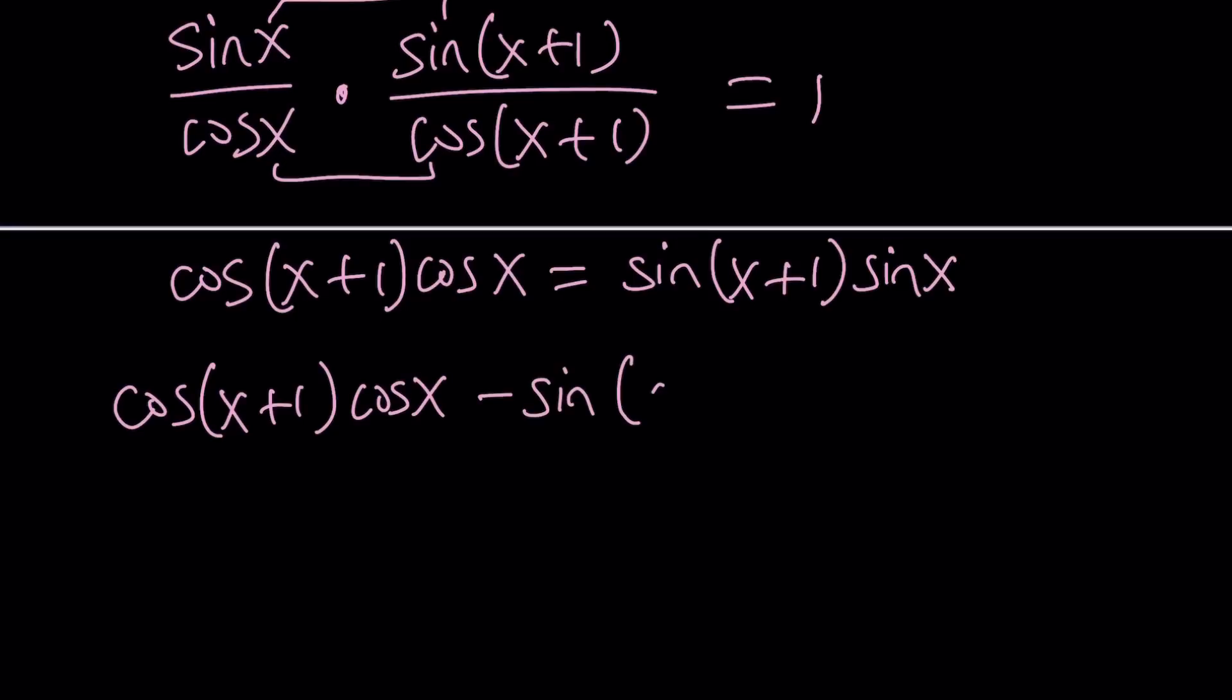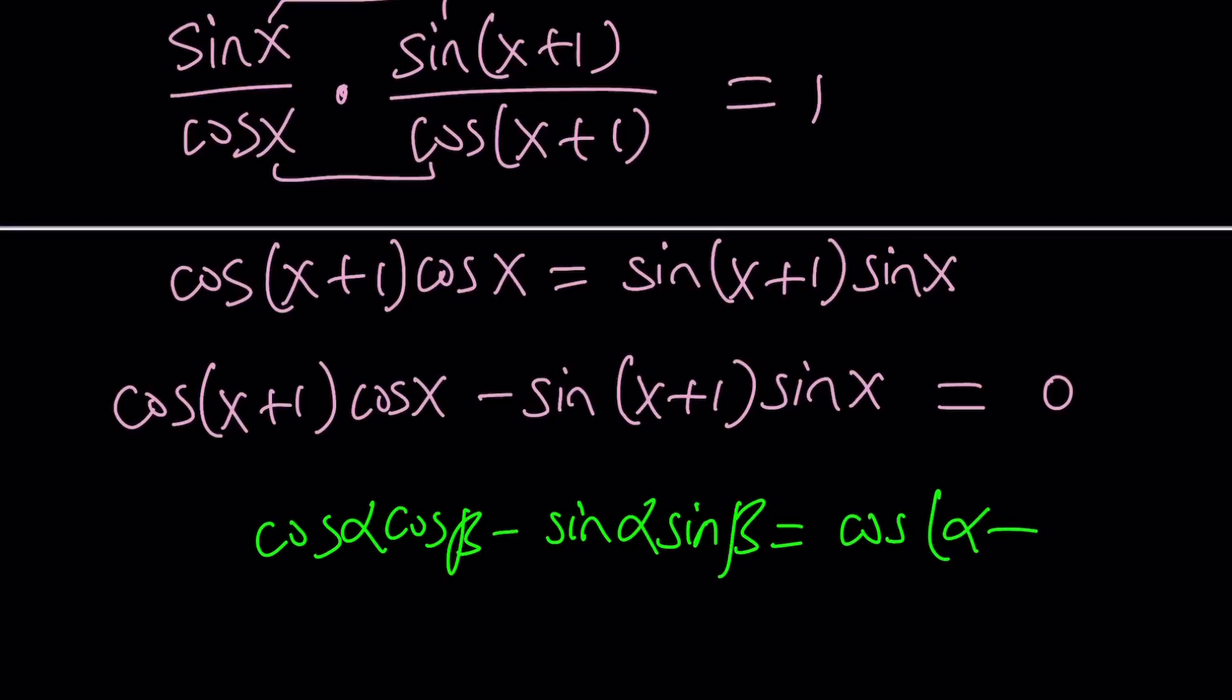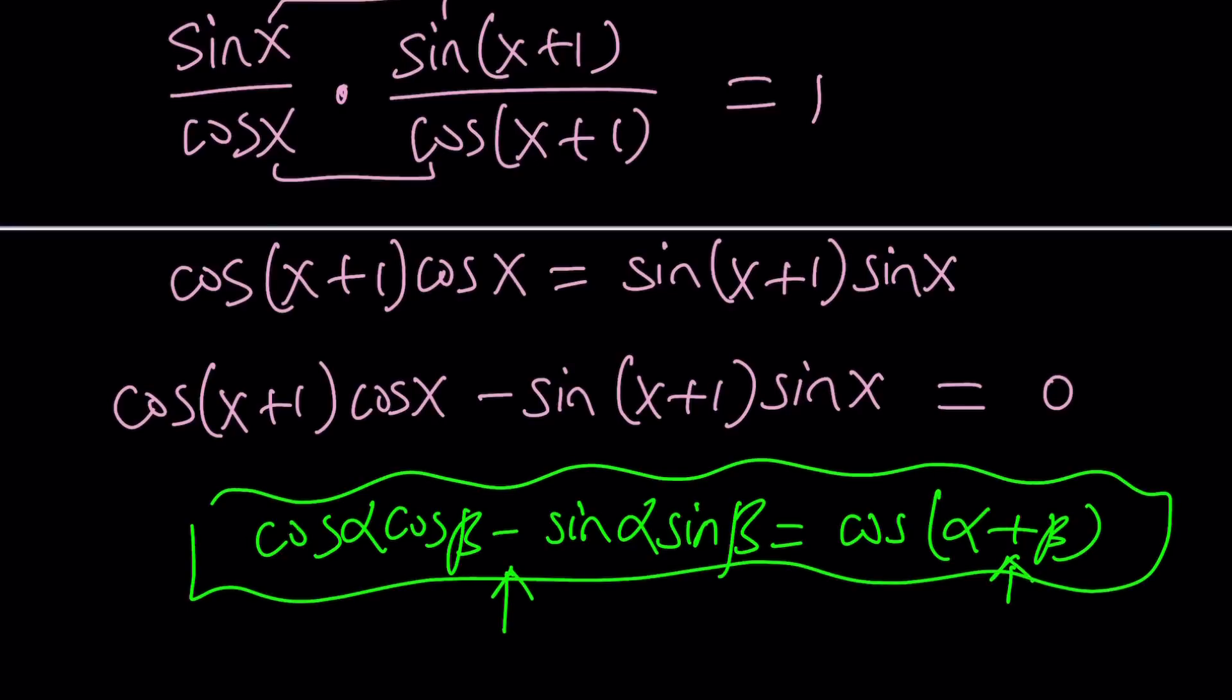If you know that cosine alpha cosine beta minus sine alpha sine beta is equivalent to cosine of alpha plus beta, then you'll be good to go. Notice that this minus sine is countered by this plus sine. The same formula is plus to plus and minus to minus. So, if you change this to plus sine, this will be changed to minus sine. It's opposite.